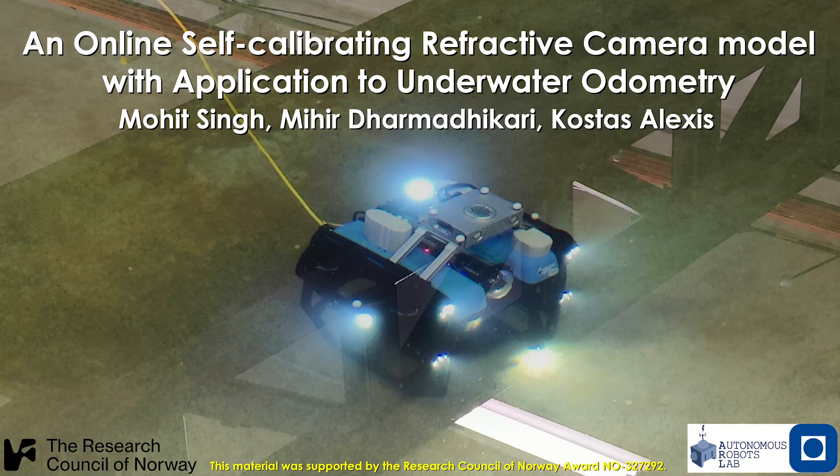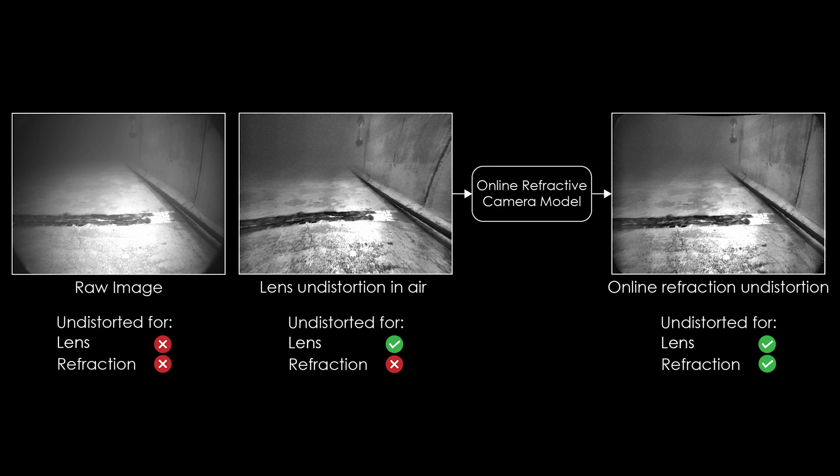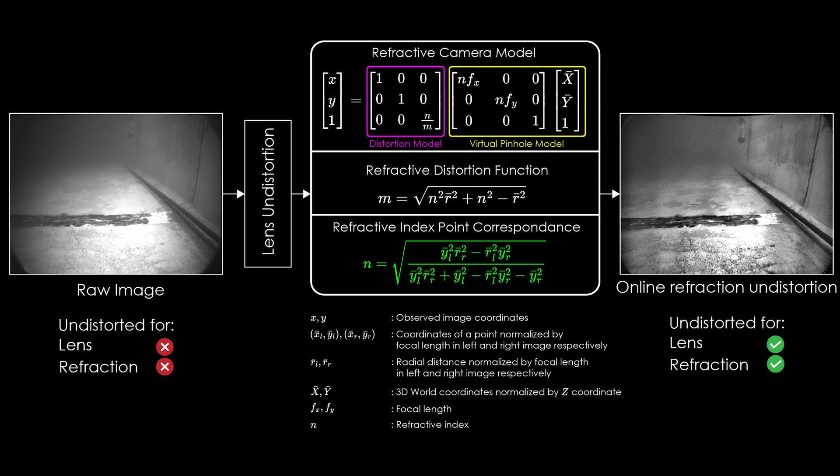In this paper, we present an online self-calibrating camera model for refractive media such as water and a formulation to estimate refractive index. Conventional calibration methods attuned to lens distortion and calibrated in refractive media are insufficient for rectification and cannot adapt to variations in refractive index.